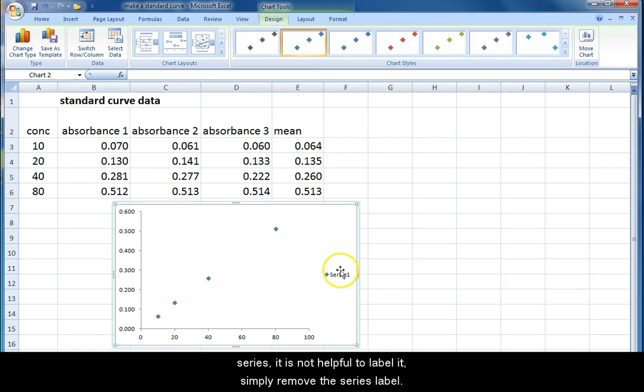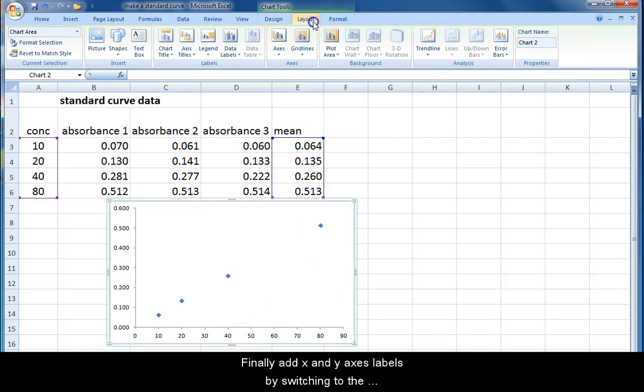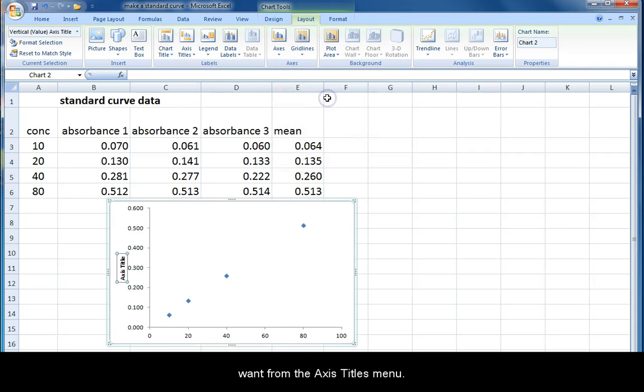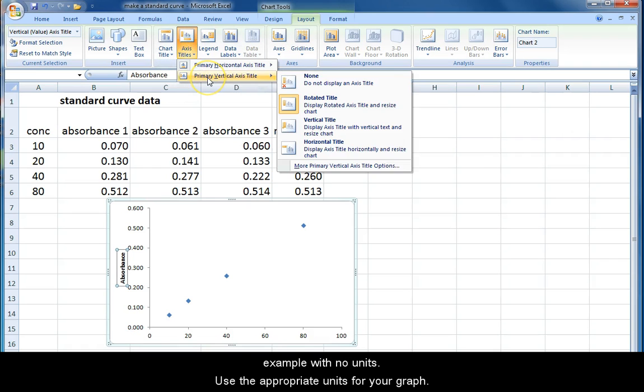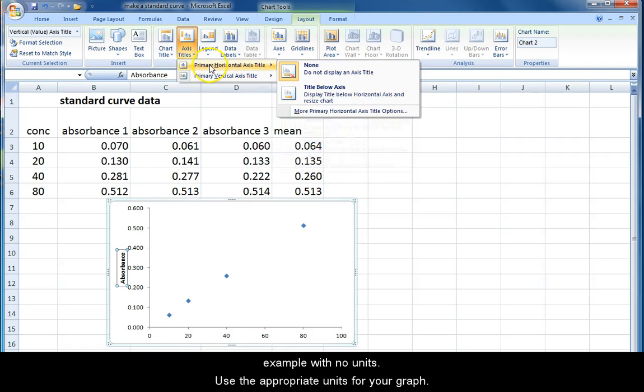Since we only have one series, it is not helpful to label it; simply remove the series label. Finally, add X and Y axis labels by switching to the chart layout ribbon and selecting the axis labels you want from the axis titles menu. Remember when labeling the axis to give descriptive titles and units. I've deliberately left this example with no units. Use the appropriate units for your graph.